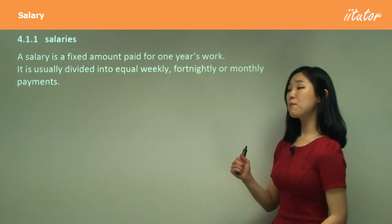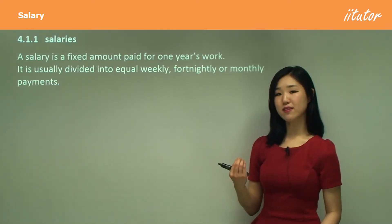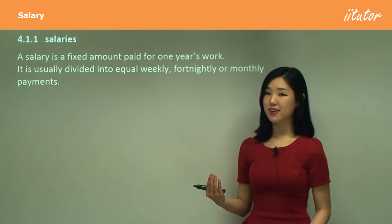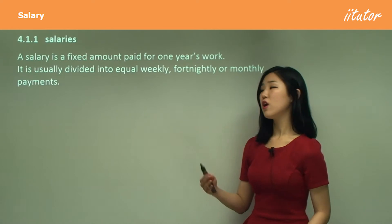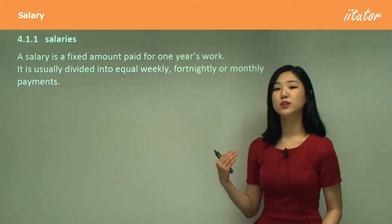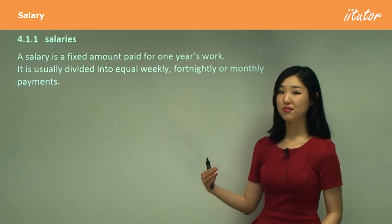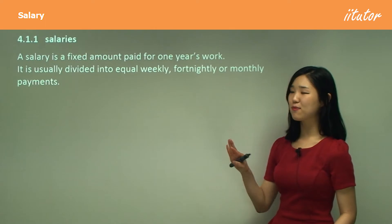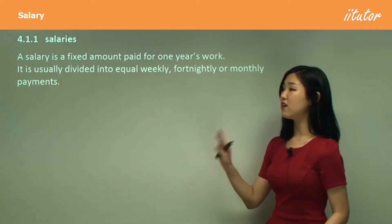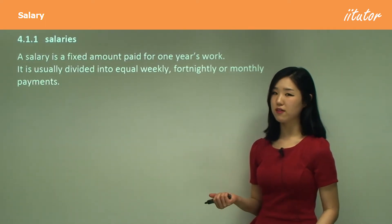And monthly — to get the monthly payment? Well, there's 12 months in a year. So if you would like to get the monthly payment, you would divide your salary by 12. Okay, and that's pretty much it. That's all you need to know in this first little part. So it's going to be very simple.